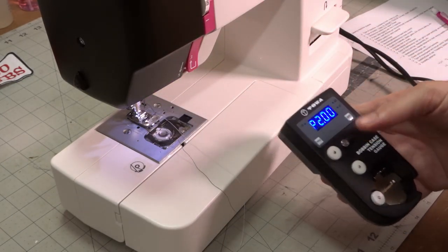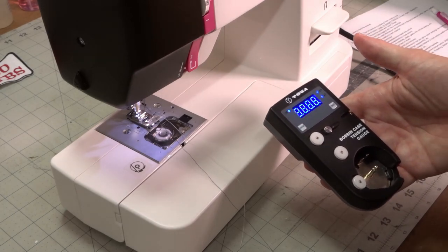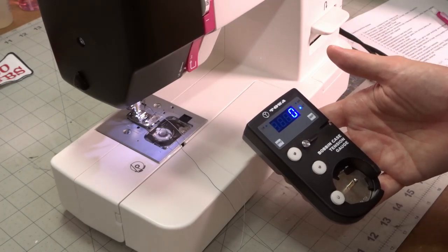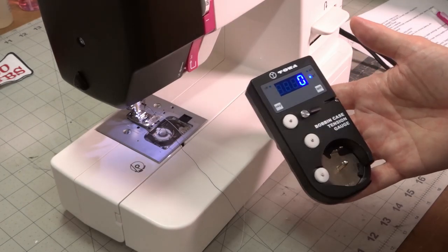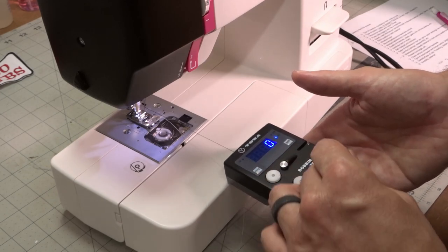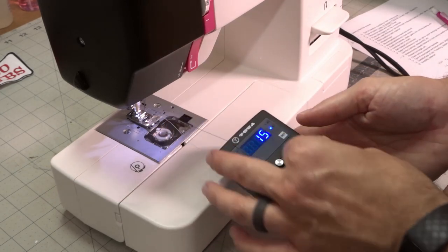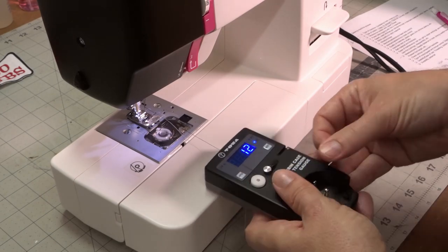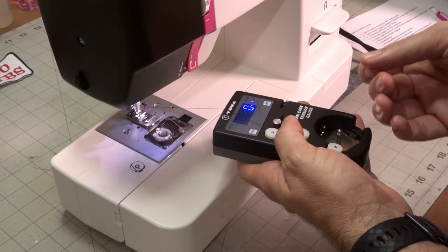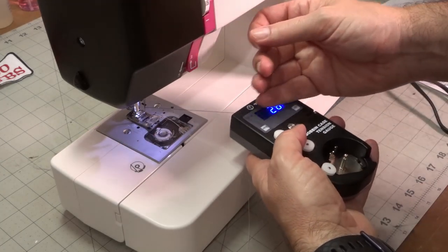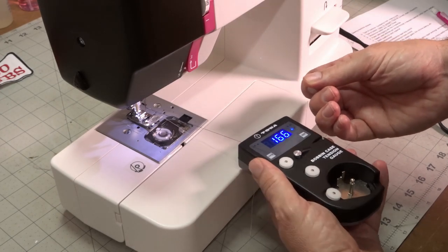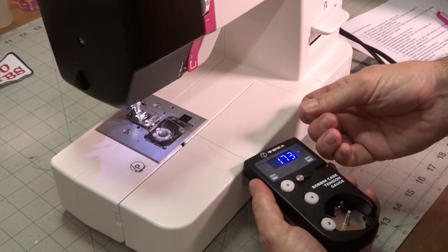And we're just checking to see what the machine is set at at the factory for your mid-range upper thread tension. This is a digital Toa meter, there's an analog one available as well. So you just thread it around like this, and then you hold the machine steady while you pull the thread...